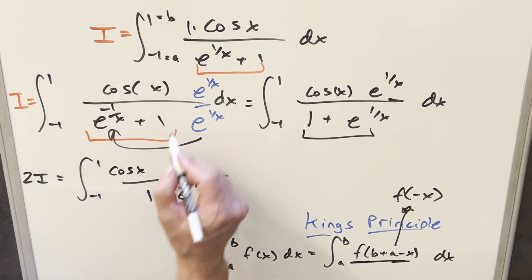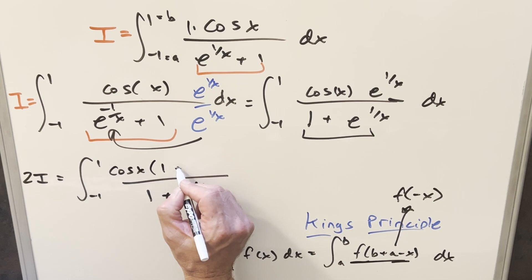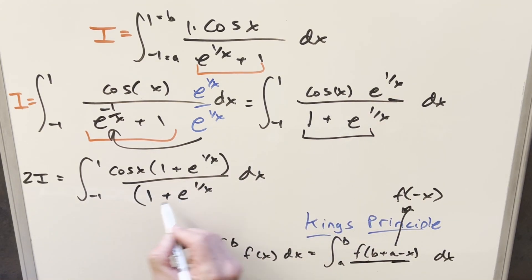And so when I do that, what's going to happen is we have one copy here, so it's going to be cosine x times 1 from this one plus the e to 1 over x here. But doing it that way, what we can do is this thing here, this is the same thing as this, so that cancels out. And now we're just integrating cosine.